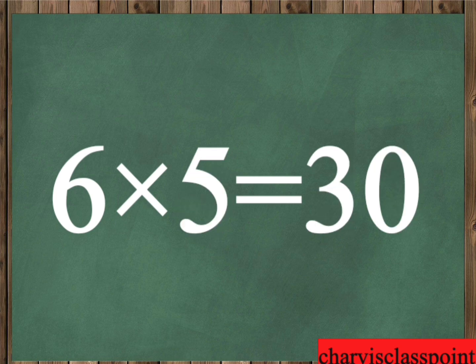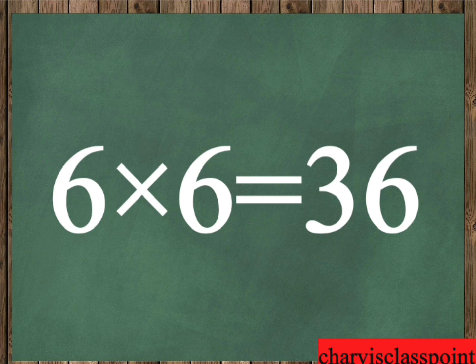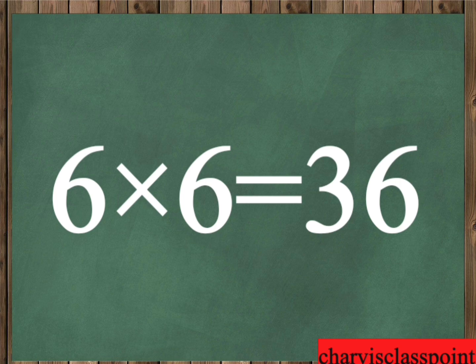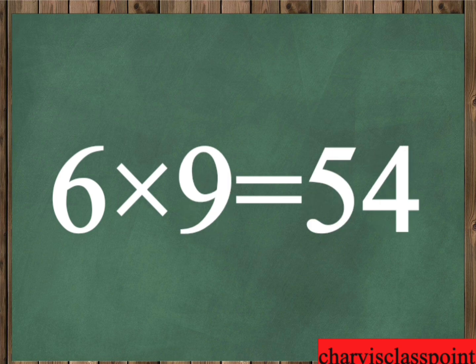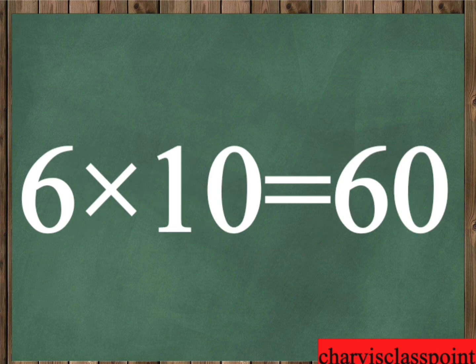Six to five is thirty. Six to six is thirty-six. Six to seven is forty-two. Six to eight is forty-eight. Six to nine is fifty-four. Six to ten is sixty.